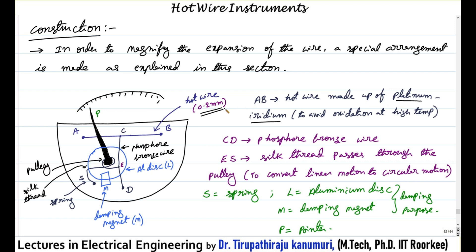The wire is made as thin as possible — thickness 0.5 mm — so that there will be uniform expansion when heated and it responds very fast. From the center point of this wire at point C, a phosphor bronze wire of length L1 is connected between points C and D. All this extra setup with the phosphor bronze wire is done for magnifying how much sag and delta L we are getting.